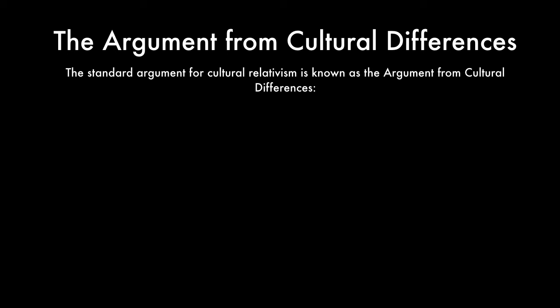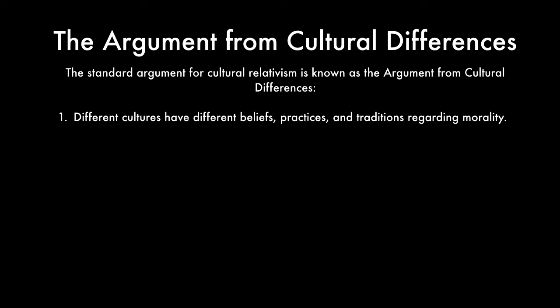Why should anybody think cultural moral relativism is true? The standard argument is known as the argument from cultural differences. It takes note of a specific fact—that different cultures have different beliefs, practices, and traditions regarding morality—and draws a conclusion from it. The argument says: different cultures have different beliefs, practices, and traditions regarding morality; therefore, different moral facts apply to different cultures. The conclusion—premise two—is just the thesis of cultural moral relativism, supposedly supported by premise one.